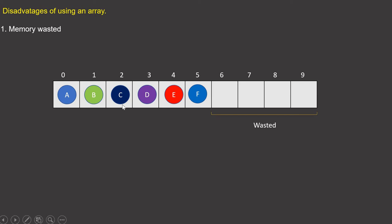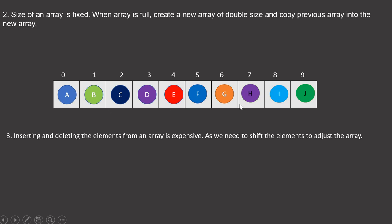You invited some friends but some couldn't come, so these boxes are wasted. Similarly, in an array, if you define the size as 10, the index will start from 0 to 9. The rest of the memory locations will be wasted if the elements are less than the capacity. This is the first disadvantage: memory gets wasted.